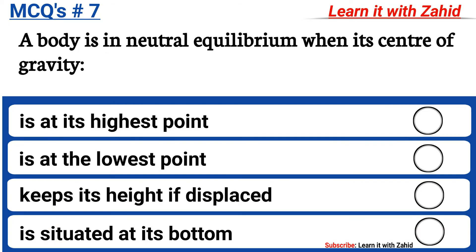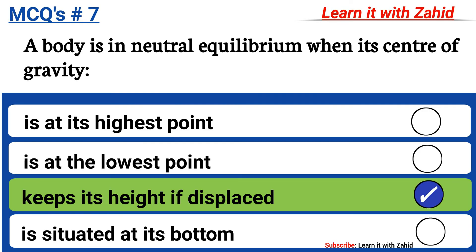A body is in neutral equilibrium when its center of gravity: option A is at its highest point, option B is at the lowest point, option C keeps its height if displaced, option D is situated at its bottom. The correct answer is option C, keeps its height if displaced.